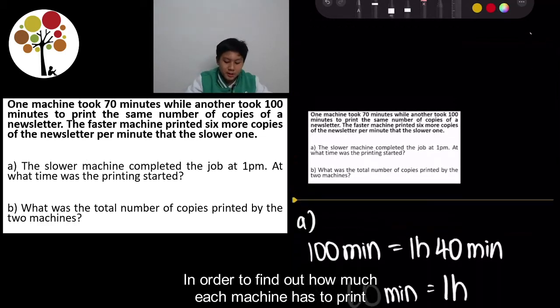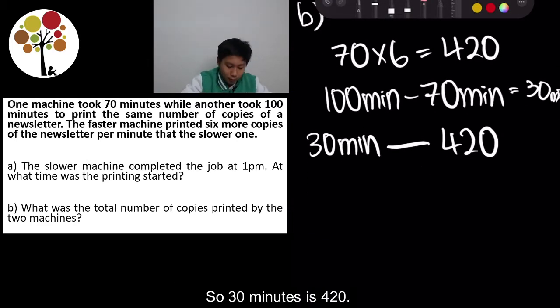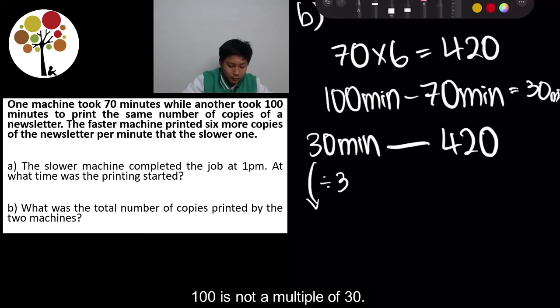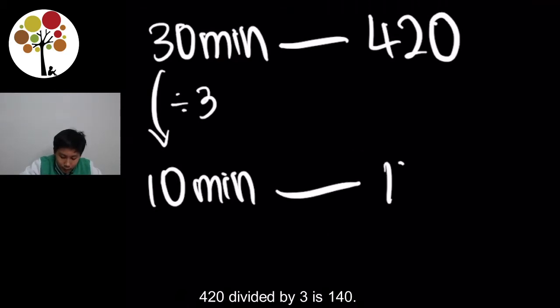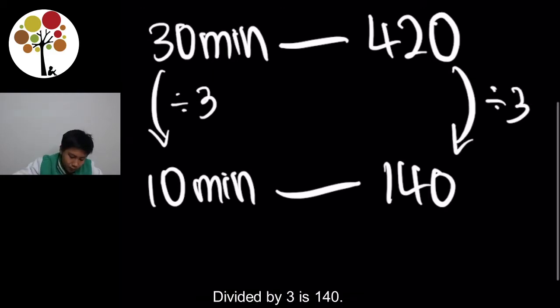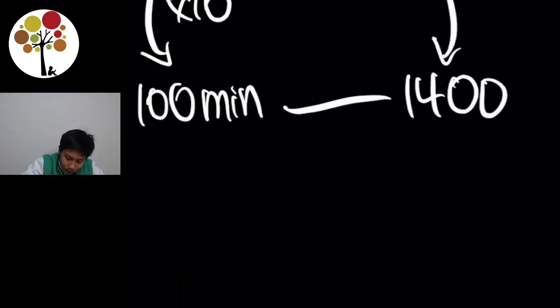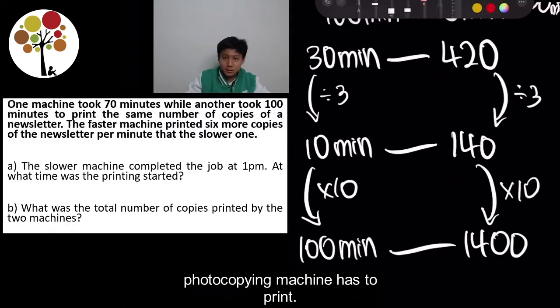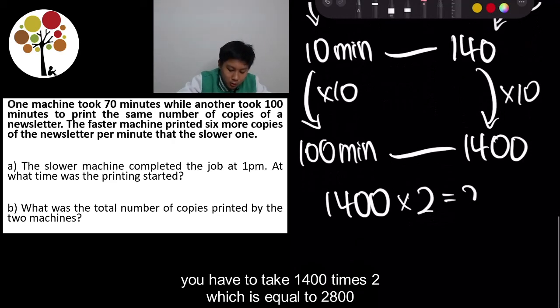To find out how much each machine printed in total, we need 100 minutes worth for the slower machine. Since 30 minutes equals 420 copies, we divide by 3 to get 10 minutes equals 140 copies. Then 10 minutes times 10 gives 100 minutes, so 140 times 10 equals 1,400 copies. That is the amount each machine has to print. Since there are two machines, we take 1,400 times 2, which equals 2,800. That is the answer for Question B.